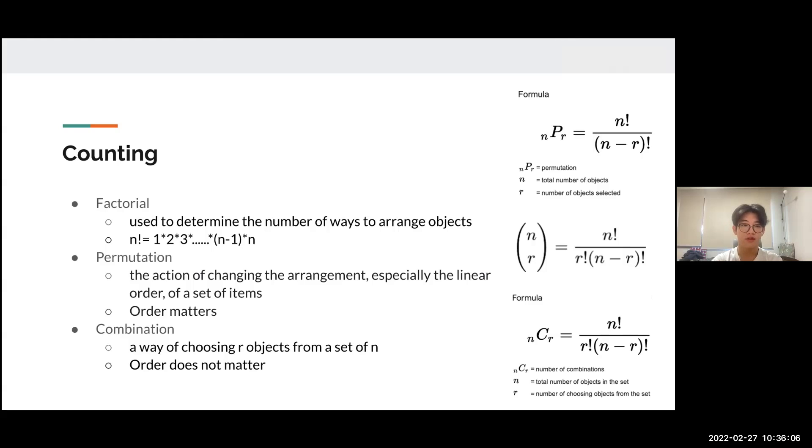Next is combination. Combination is a way of choosing r objects from a set of n, and order does not matter. For example, let's say you have to pick two persons from a group of 12 people. Picking person A and B is the same as picking person B and A. We're not considering the order. The formula is located on the right middle and bottom parts. These two notations indicate the same value. N is the total number of objects in the set, which in my example would be 12 people.